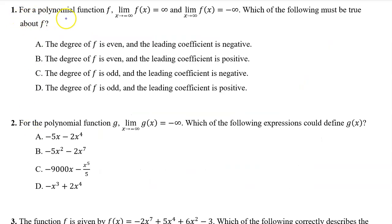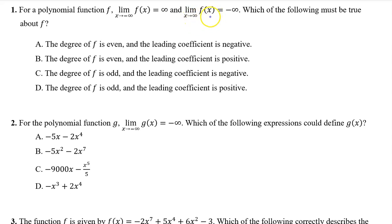Number 1. For a polynomial function f, the limit as x approaches negative infinity of f(x) is equal to infinity, and the limit as x approaches infinity of f(x) is equal to negative infinity. Which of the following must be true about f?